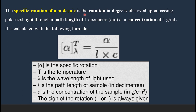Specific rotation is the rotation in degrees observed upon passing the polarized light through a path length of one decimeter and a concentration of one gram per mL. So specific rotation is the angle of rotation alpha when l equals one decimeter and c equals one gram per mL. This alpha, written within square brackets, is called specific rotation.